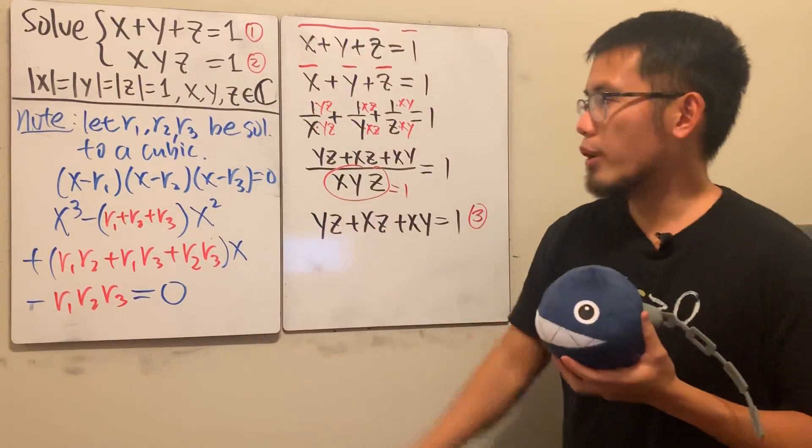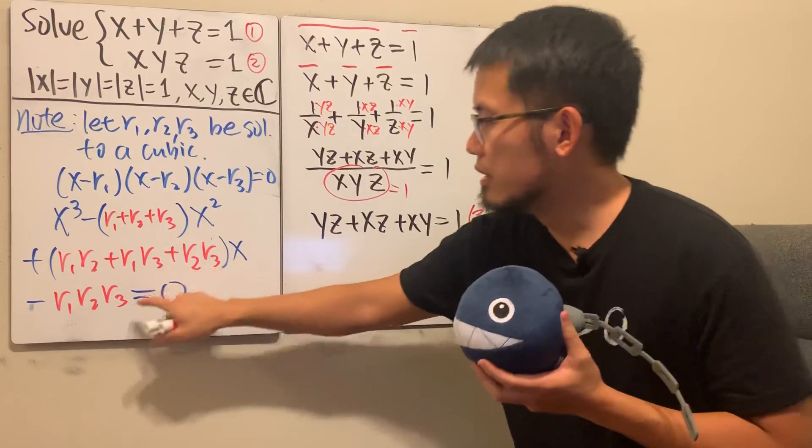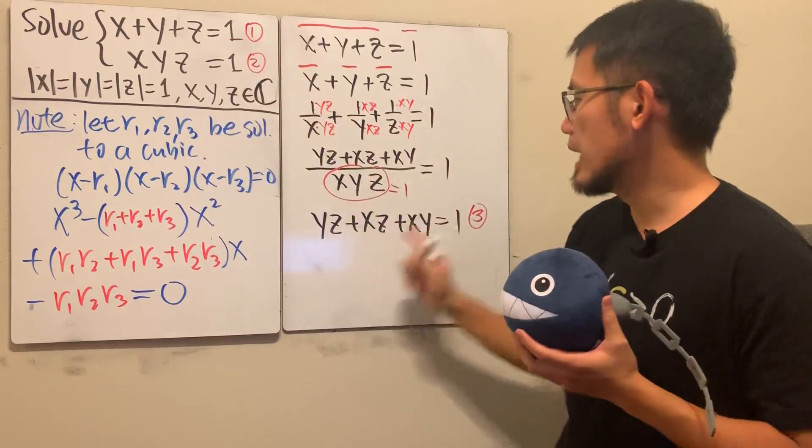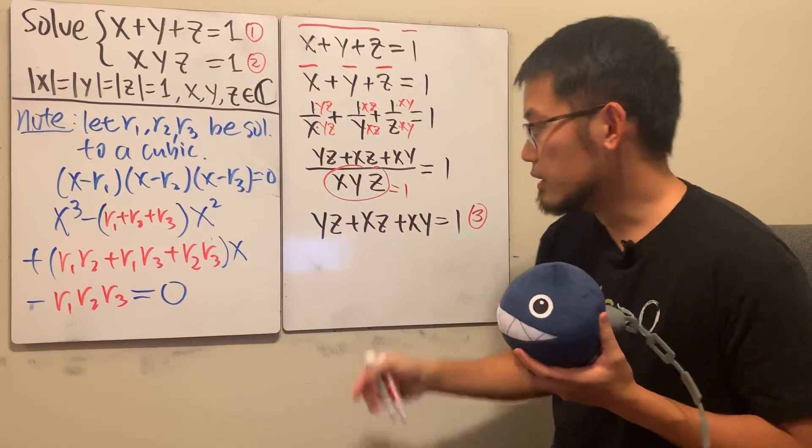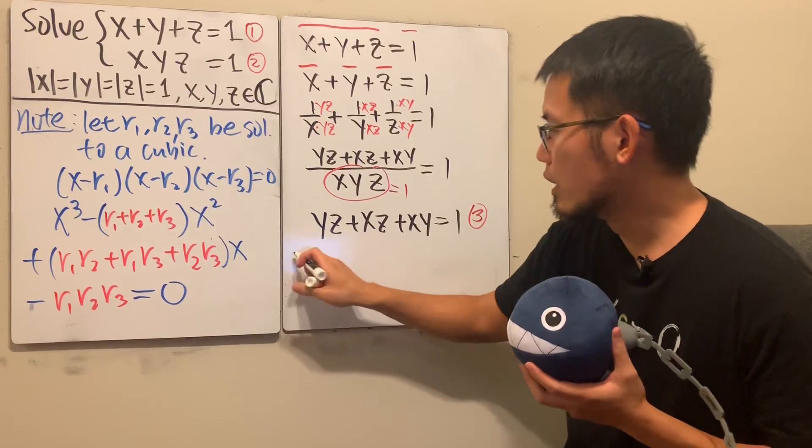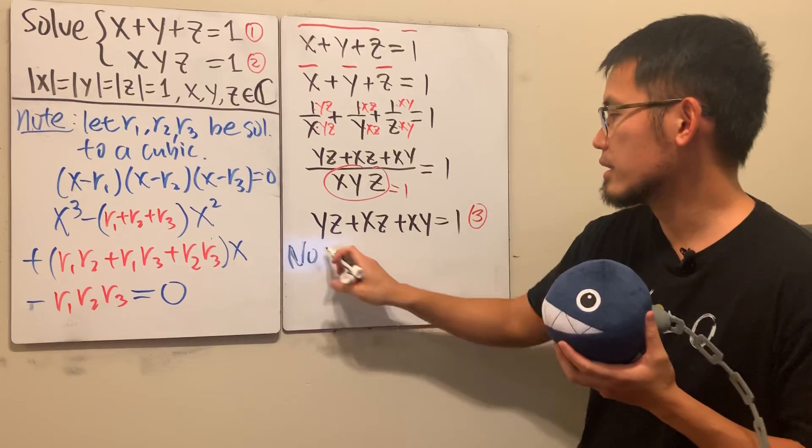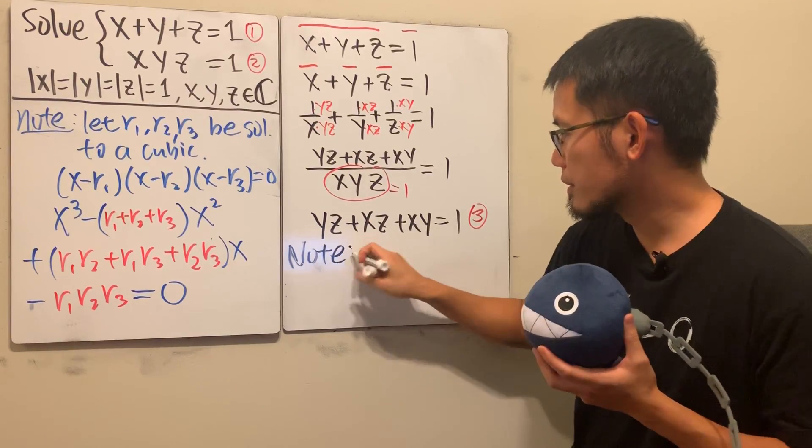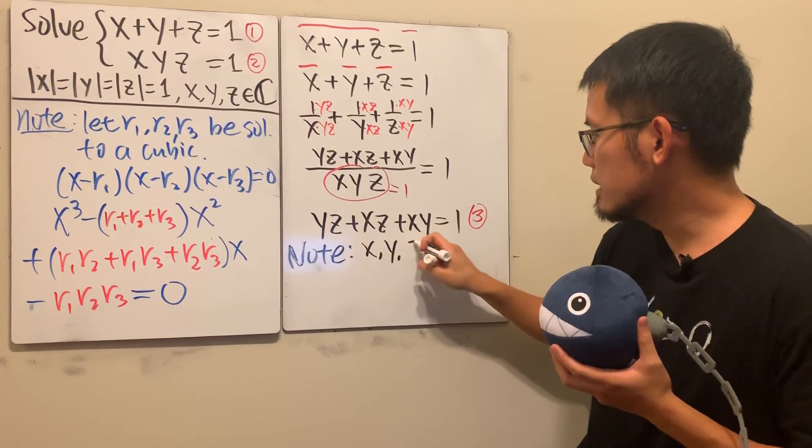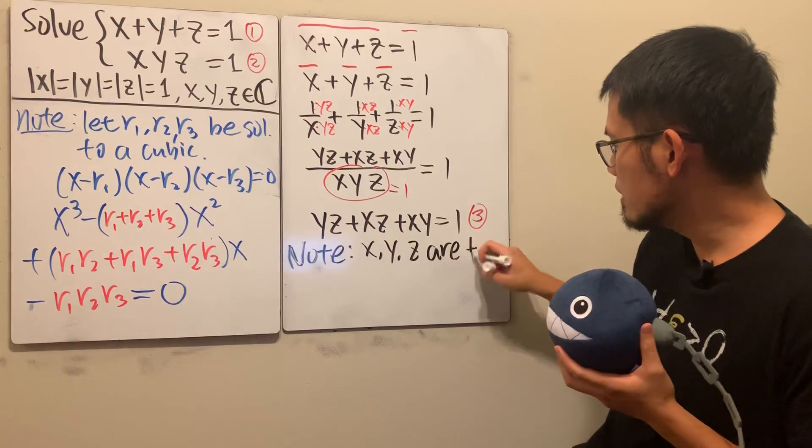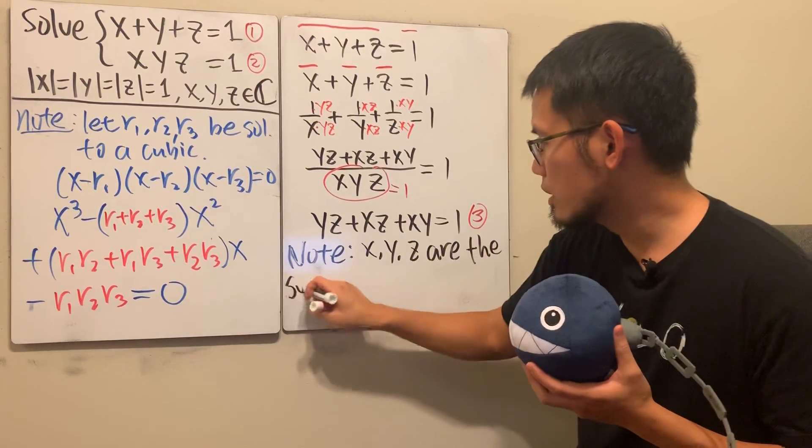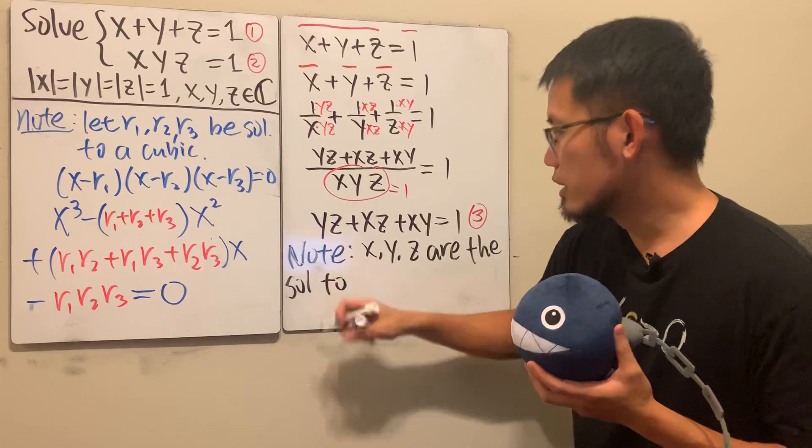So, why did I bring that up? This, this, that, this, this, that, they have that flavor. So right here, I can tell you, note, what's x, y, and z then? So, note, x, y, z are the solutions to the cubic equation.